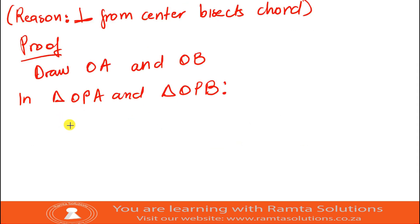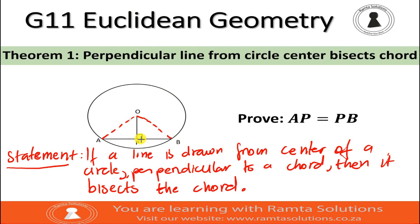So, angle OPA is equal to angle OPB. This is equal to 90 degrees. But where do we get that from? It is given in the diagram.